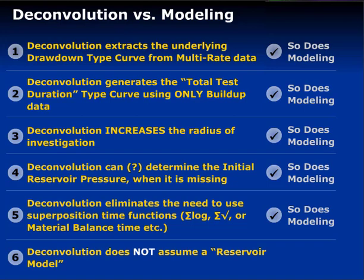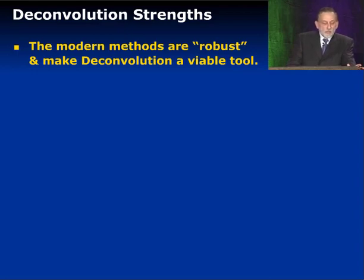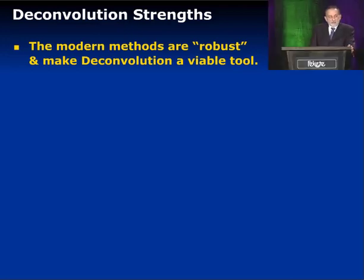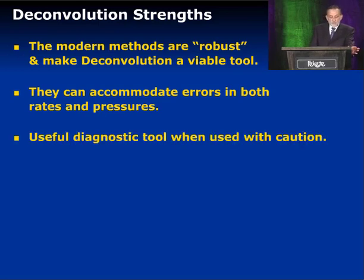That's the weakness of reservoir modeling and the apparent strength of deconvolution — we don't have to assume a reservoir model. Instead we've assumed a mathematical model. The modern deconvolution methods are very robust because of this total least squares multivariable nonlinear regression with curvature control. It has become a viable tool, allowing us to accommodate errors in both pressure data and rate data. It can be a useful diagnostic tool, but we've got to use it with caution — it's not a silver bullet.